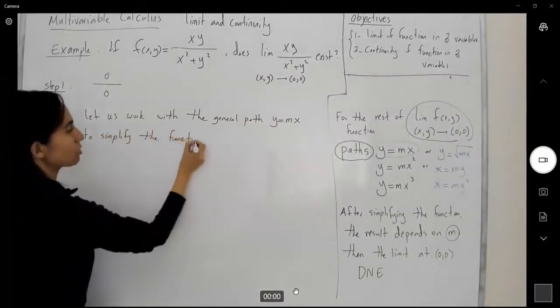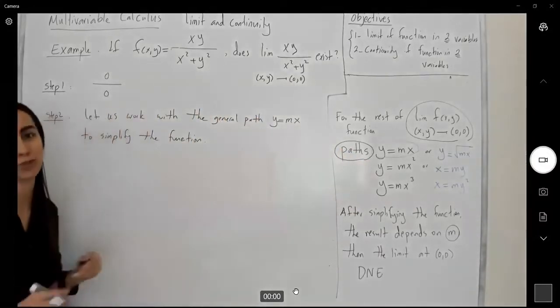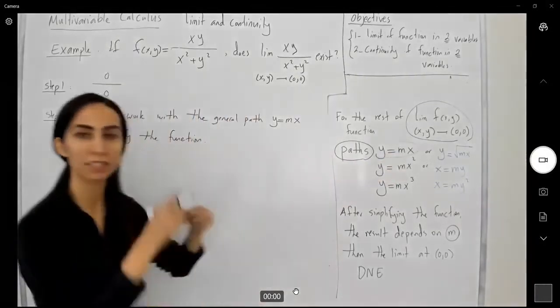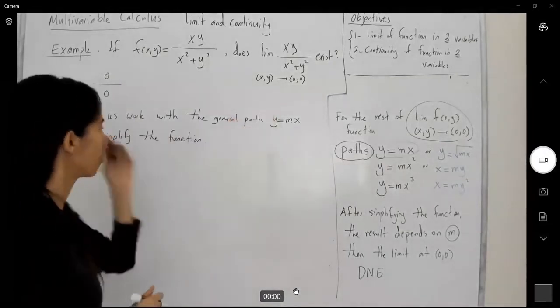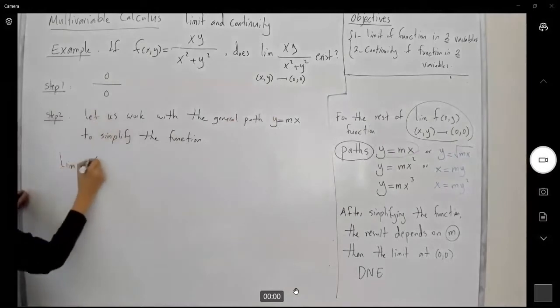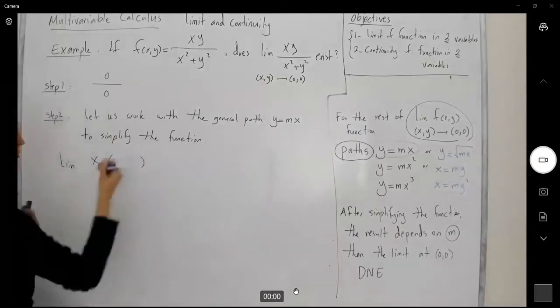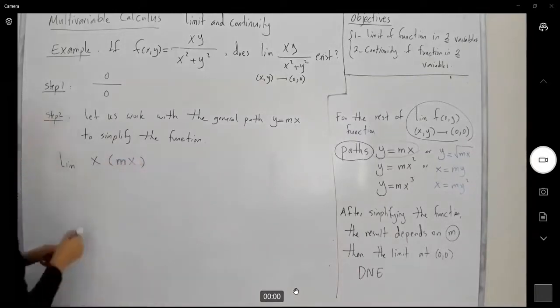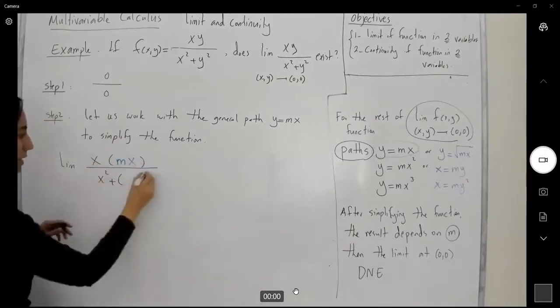You're getting closer and closer to the origin, and this path actually passes through the origin. With different values of m, you get different lines, different paths passing through the origin. So in this case, you get the limit of x times mx divided by x squared plus mx squared.